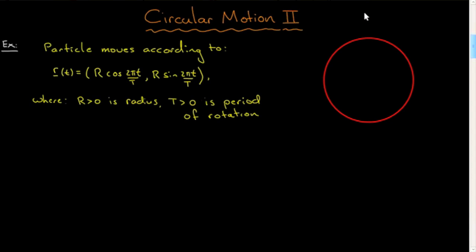Welcome to the second screencast in the series on differentiating vector functions. This is circular motion 2, so I'm going to extend just slightly the previous example of circular motion and emphasize a few new points.